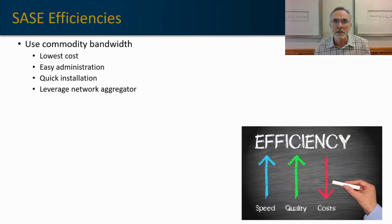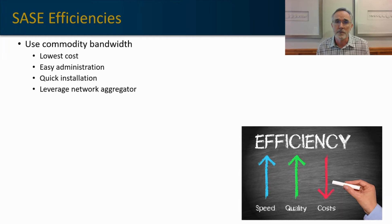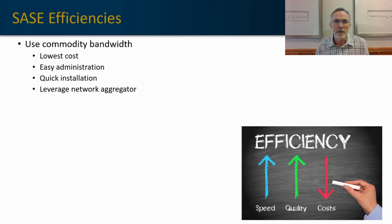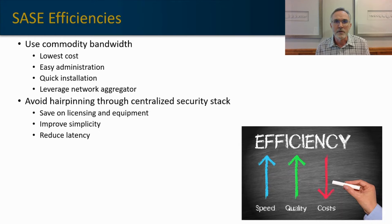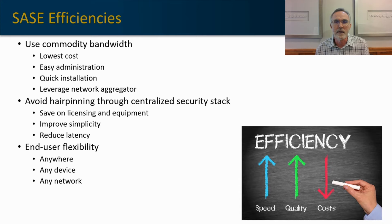There are clear network efficiencies in a SASE environment. First, bandwidth optimization: you're no longer restricted to a private MPLS network from a single provider. You can select bandwidth from any provider available to your end-user community, optimizing cost and provisioning services very quickly relative to an MPLS installation. We recommend using aggregators to maintain network objectivity without losing the efficiency of working with a single vendor. We also avoid the hairpinning element, which saves on licensing and equipment costs, consolidates the edge, simplifies it, and reduces latency.